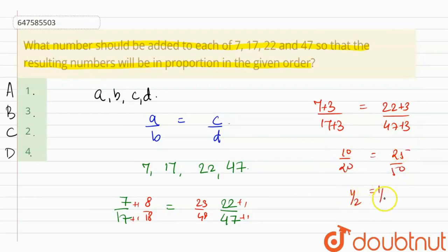Which is equal to 1 by 2 equals 1 by 2. Clearly, adding 3 makes these numbers proportional. Therefore, B, which is 3, is the correct answer.